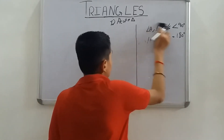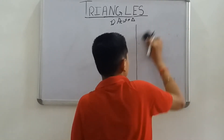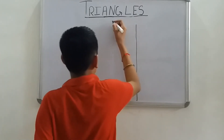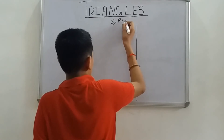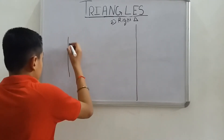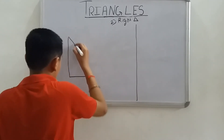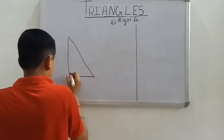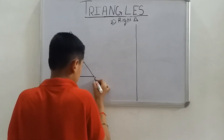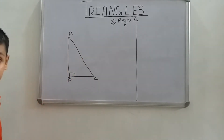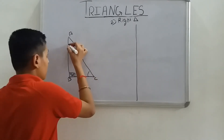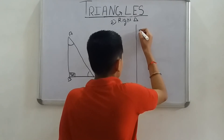Now let's look at the right angle triangle. In a right angle triangle, one angle is 90 degrees and the other two angles are less than 90 degrees.